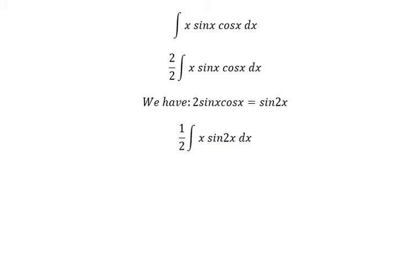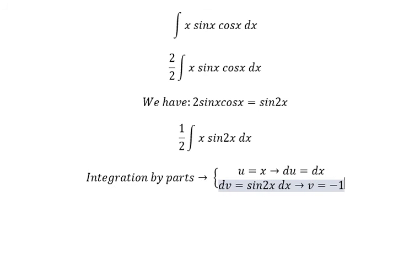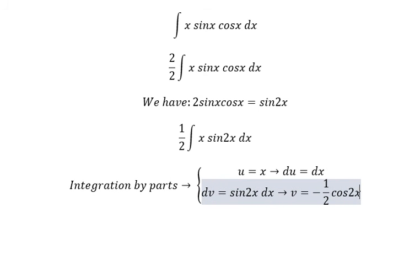Now we can use integration by parts. We set u equals x, du equals dx, dv equals sin 2x dx. This gives us v equal to negative 1 over 2 cos 2x.